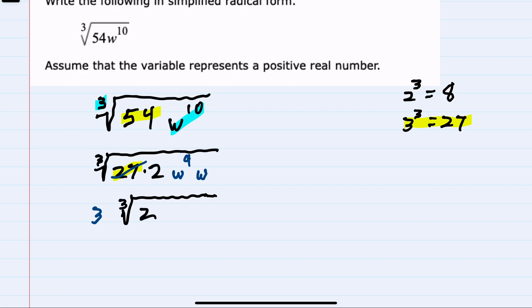And then our w to the 9th can also come outside the radical. Since the 9 is a multiple of 3, we can divide the 9 by 3. Since the cubed root is actually the one-third exponent, we're dividing the exponent by 3,